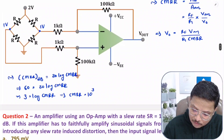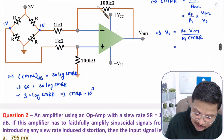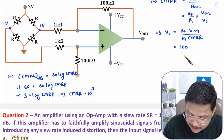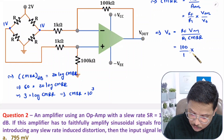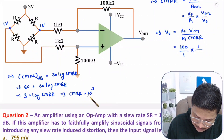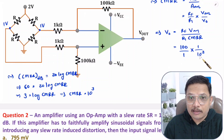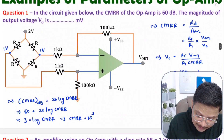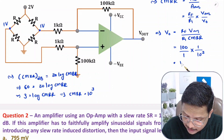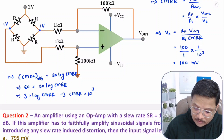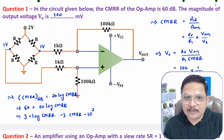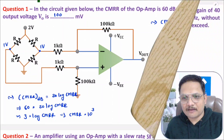Now substituting values: Rf = 100 kΩ, R1 = 1 kΩ, so Rf/R1 = 100. Vcm = 1 V, CMRR = 10³. So V0 = 100 × 1 / 10³ = 100/1000 = 100 millivolts. The correct answer for the first question is 100 millivolt. Now let us solve the second problem.